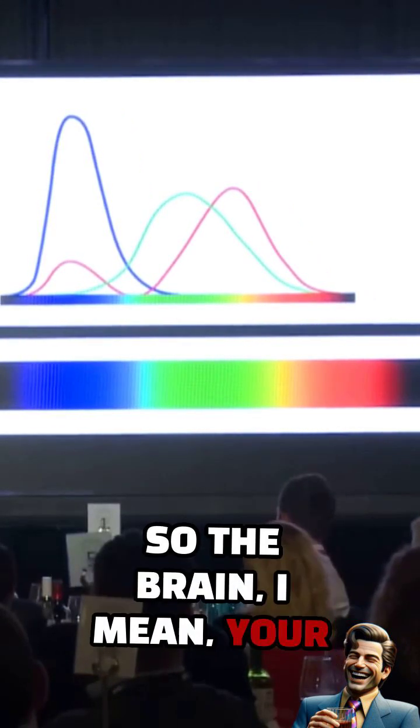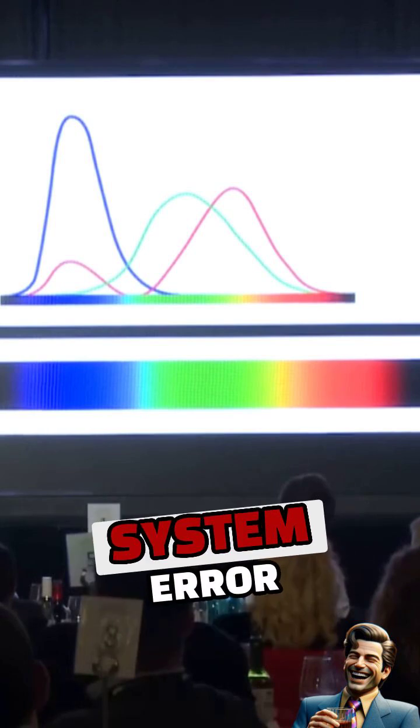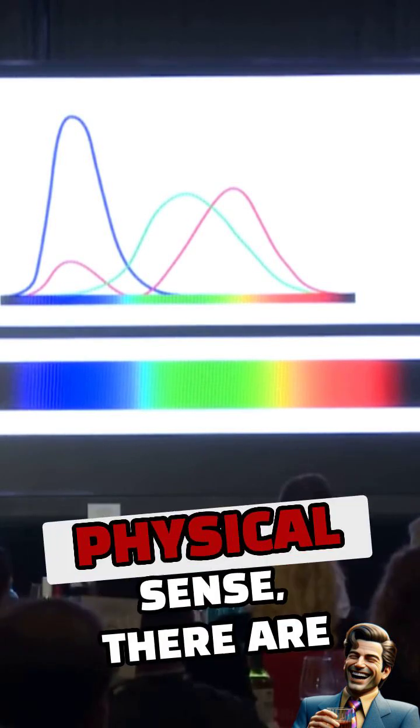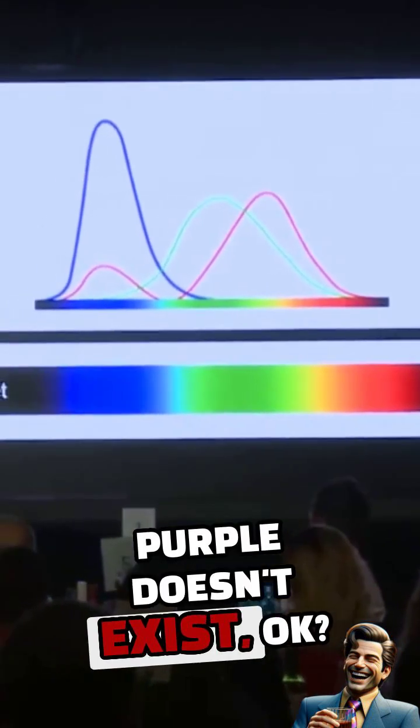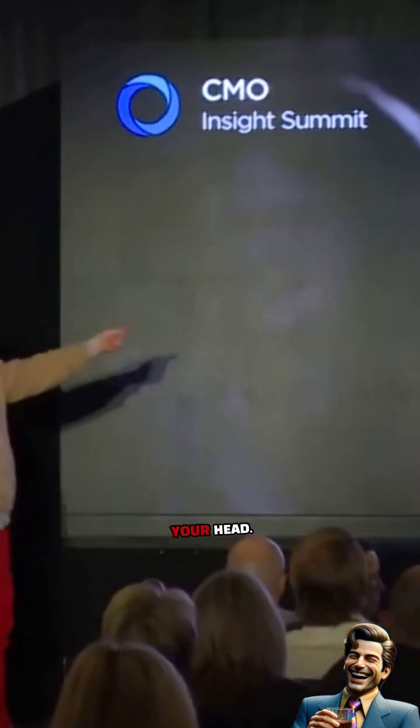So the brain, I mean, your brain could go fuzzy and say, system error. Because in one sense, in a physical sense, there are no purple photons. Purple doesn't exist. It's entirely created in your head.